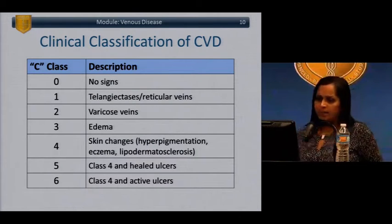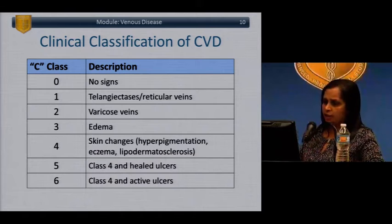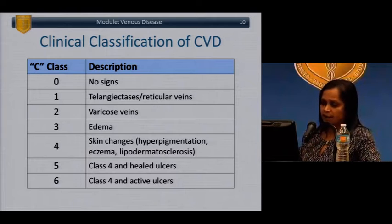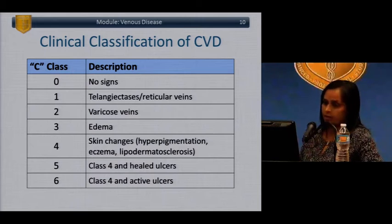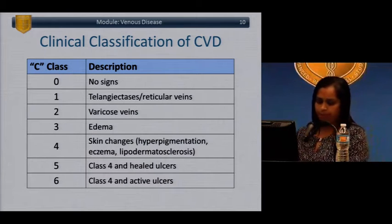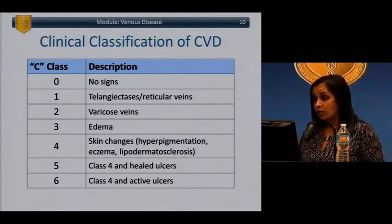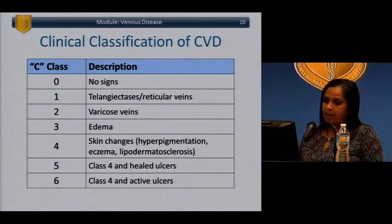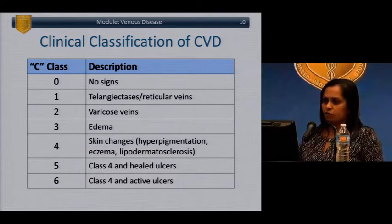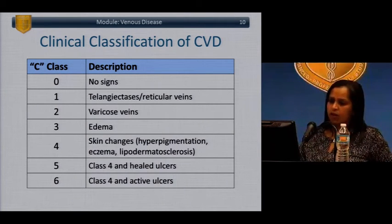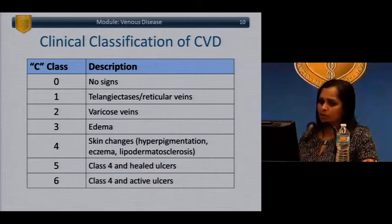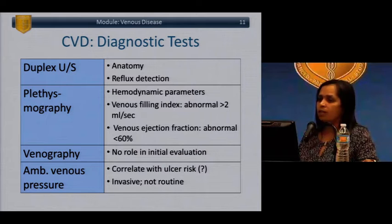The C-class of the CEEP classification can range from no symptoms and signs to active ulcerations and skin changes, with a variety of changes in between. There are also quality of life questionnaires and an additional venous severity scoring system that correlates with the C-classification. The C-classification is probably most widely used for describing venous disease.